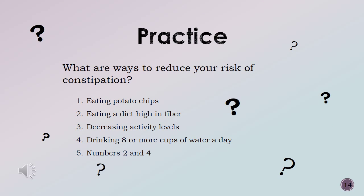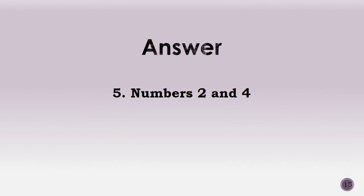Let's practice one more time. What are ways to reduce your risk of constipation? One, eating potato chips; two, eating a diet high in fiber; three, decreasing activity levels; four, drinking eight or more cups of water a day; five, numbers 2 and 4. The answer is number 5 — numbers 2 and 4. The ways to reduce your risk of constipation include eating a diet high in fiber of 20 to 30 grams a day, drinking plenty of water — eight 8-ounce glasses a day — staying active, and possibly using stool softeners.